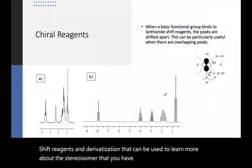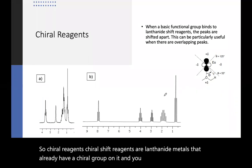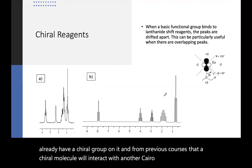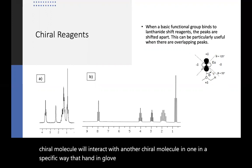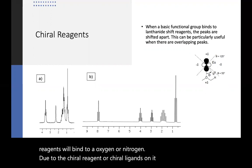So chiral reagents, chiral shift reagents, are lanthanide metals that already have a chiral group on it. And you know from previous courses that a chiral molecule will interact with another chiral molecule in a specific way, that hand-in-glove type of thing. So lanthanide shift reagents will bind to an oxygen or a nitrogen and due to the chiral reagent or chiral ligands on it, will interact with it in a different, some of the side chains in a different way.